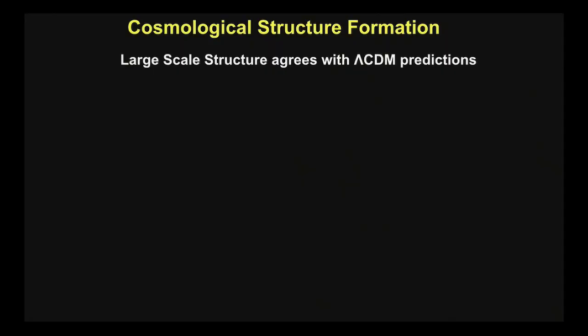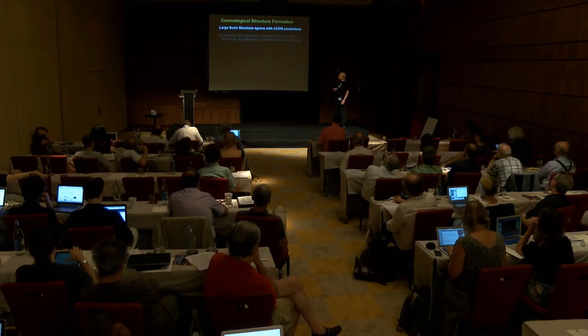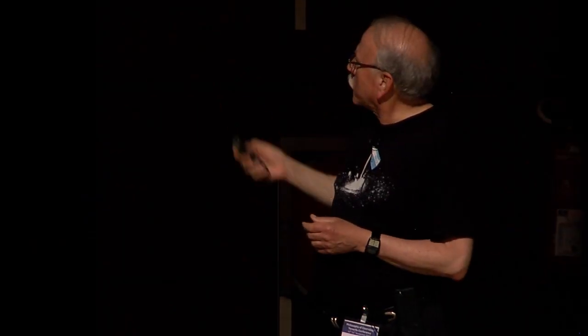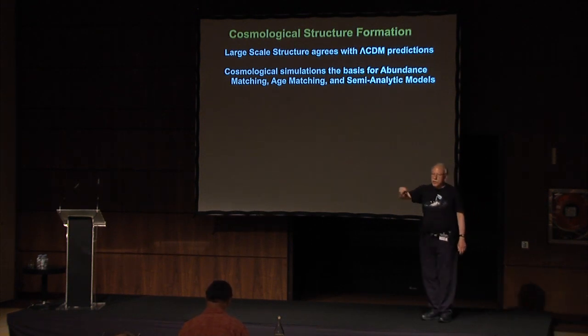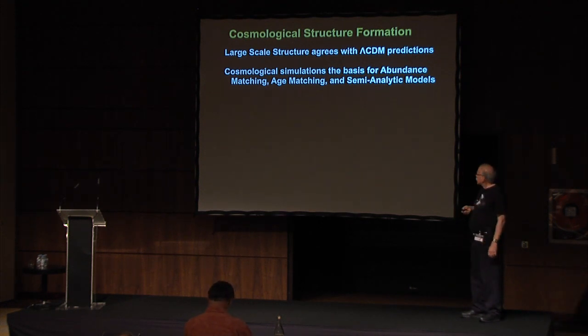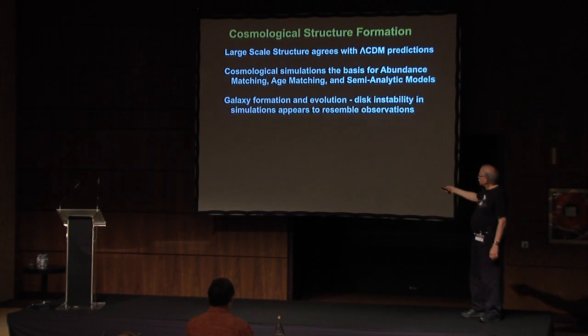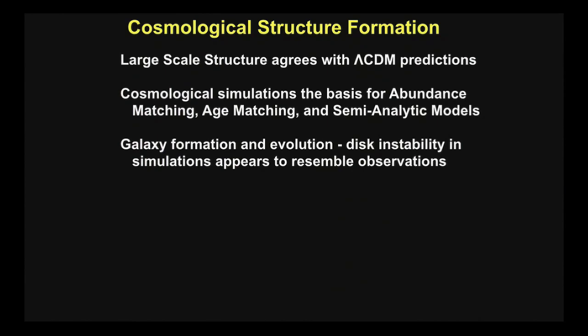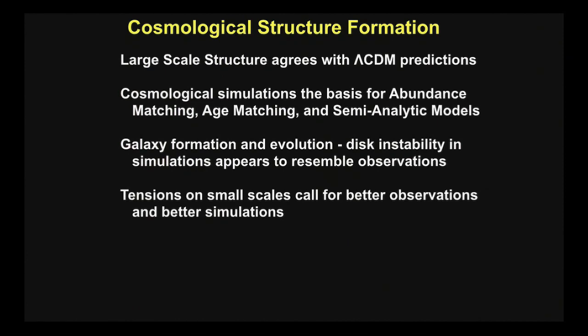Let me summarize. Large-scale structure does very well — there are simply no disagreements I'm aware of between the predictions of the large-scale simulations and the observations. Cosmological simulations now provide the basis for abundance matching and age matching, and for semi-analytic models. Galaxy formation and evolution — disk instability and simulations appear to resemble observations. You saw the clumps and the nugget story. But there are tensions on small scales, and those call for better observations and better simulations. Thank you.